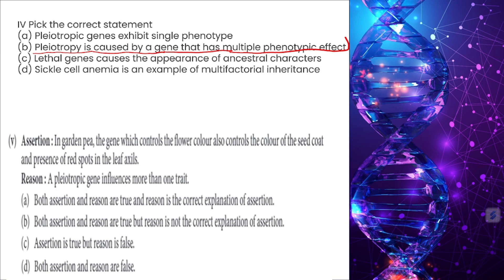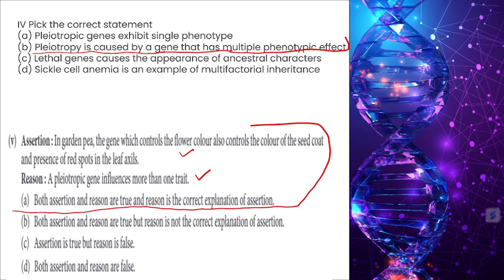Assertion: In garden pea, the gene which controls flower color also controls color of the seed coat and presence of a red spot in the leaf axil. Reason: A pleiotropic gene influences more than one trait. Both assertion and reason are correct, and the reason is the correct explanation for assertion.